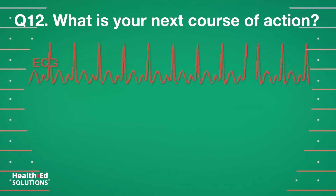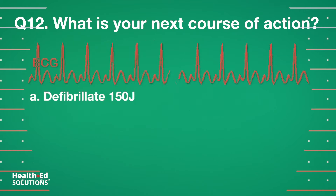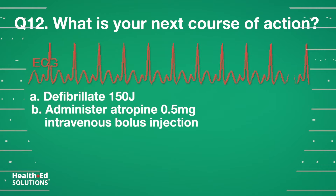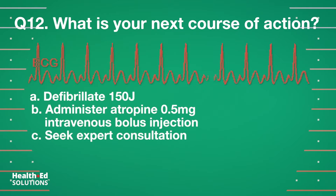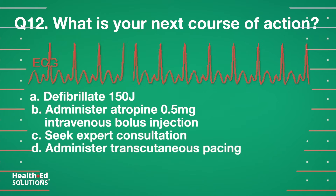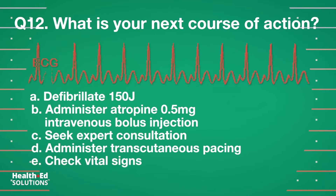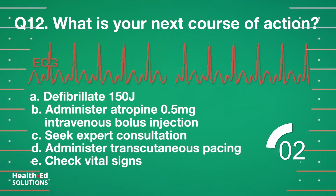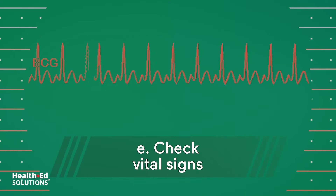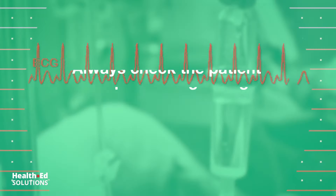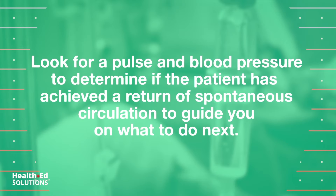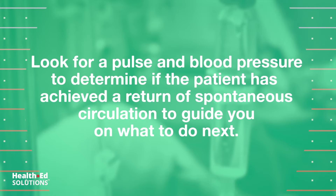Question 12: What is your next course of action? A. Defibrillate 150 joules. B. Administer atropine 0.5 mg intravenous bolus injection. C. Seek expert consultation. D. Administer transcutaneous pacing. E. Check vital signs. Correct answer E: Check vital signs. Always check the patient after performing a stage on the algorithm. Look for a pulse and blood pressure to determine if the patient has achieved a return of spontaneous circulation to guide you on what to do next.